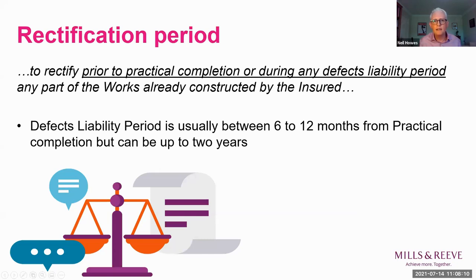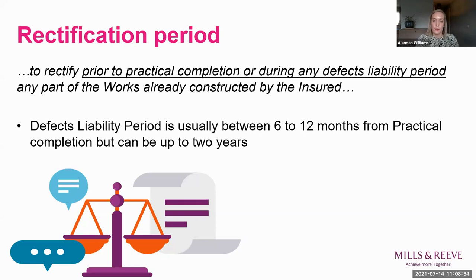The next essential element is that the works must be needed to rectify defects prior to practical completion or during any defects liability period. In this particular wording, there are two periods of time within which the insured can seek to recover mitigation costs: first, during the period before practical completion, and second, during the defects liability period. The practical completion date will be the date the practical completion certificate is issued, and the defects liability period is usually between six to twelve months from practical completion, but can be up to two years long.